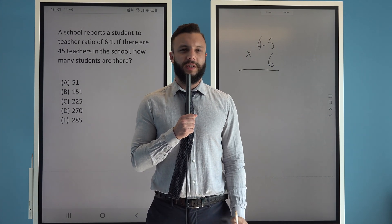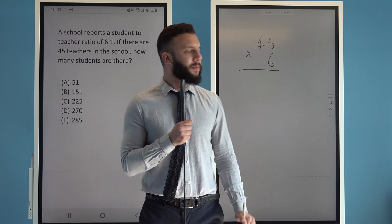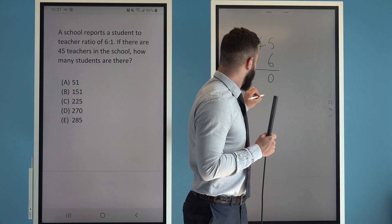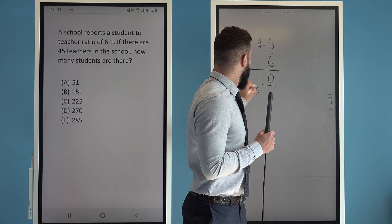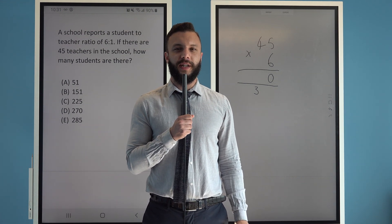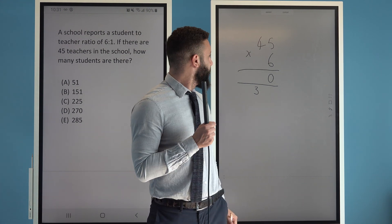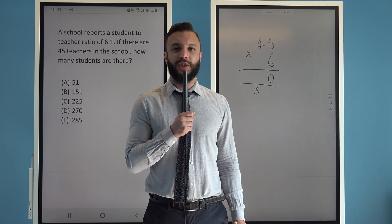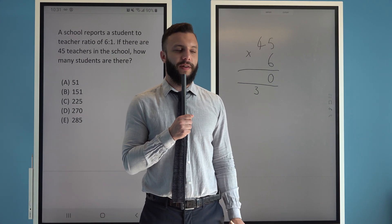So to start we'll do 6 times 5 which gives us 30. We put the 3 in the tens column as it represents 30. Now 6 times 4 which gives us 24 plus the 3 to get 27.